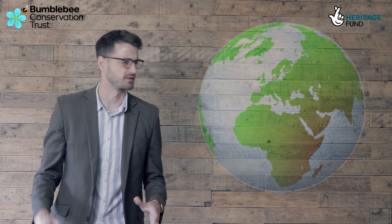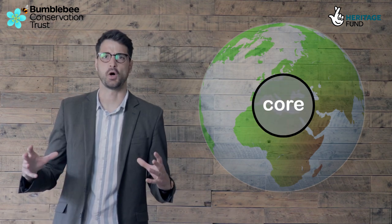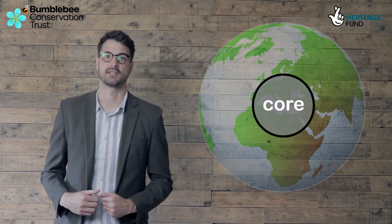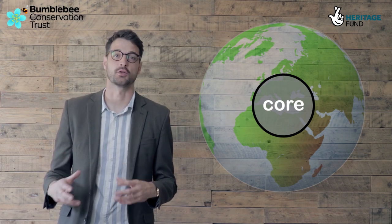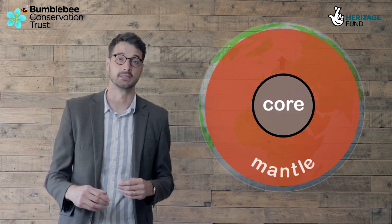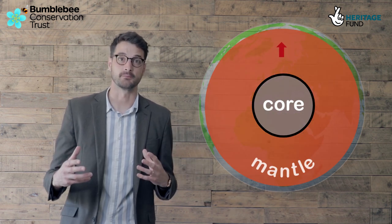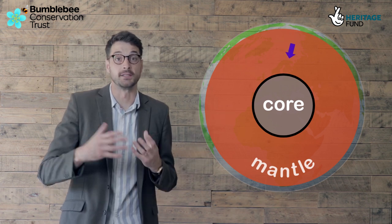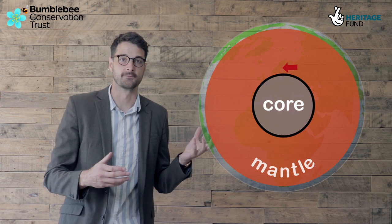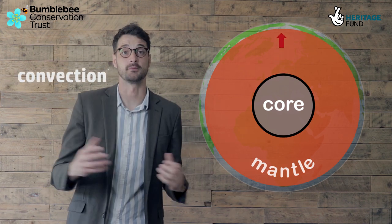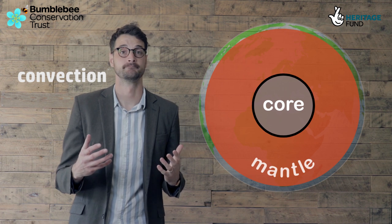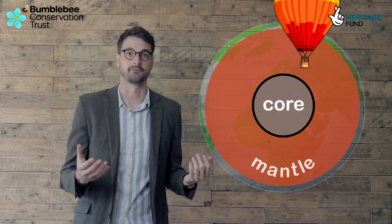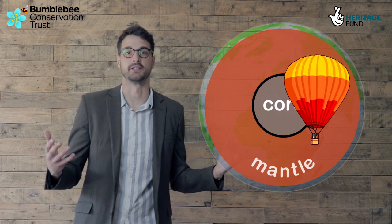In the centre of the Earth is the core — a huge ball of iron and nickel that can reach temperatures between 5 and 6 thousand degrees Celsius. This incredible heat causes the fluid layer above the core, called the mantle, to rise. As the fluid mantle rises away from the heat of the core, it cools and begins to fall again, being reheated and rising once more. This is known as convection. The same theory can be seen in practice in a hot air balloon: as the air in the balloon is heated, it rises through the cooler air around it, and for the balloon to descend again, the hot air is released.